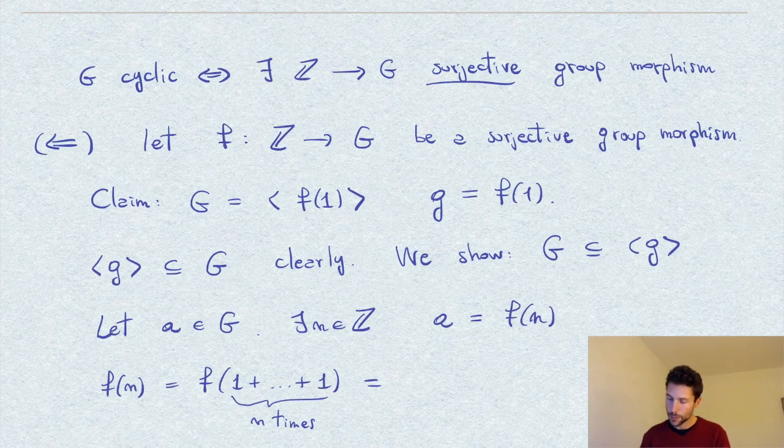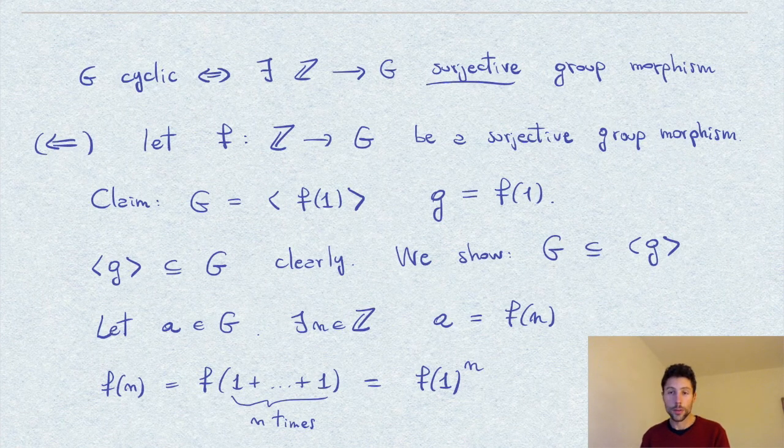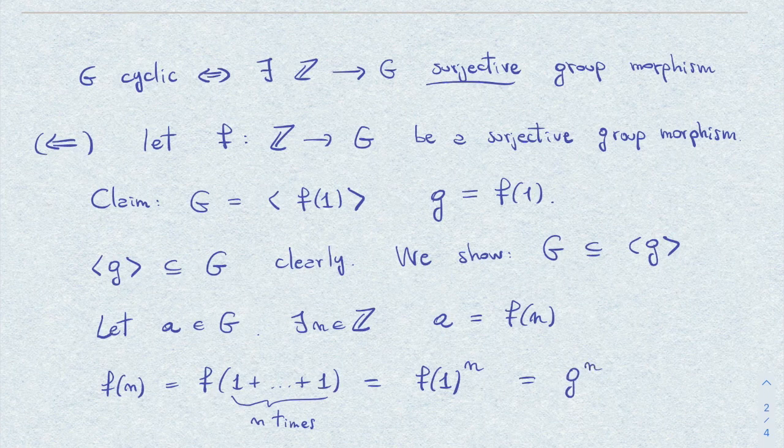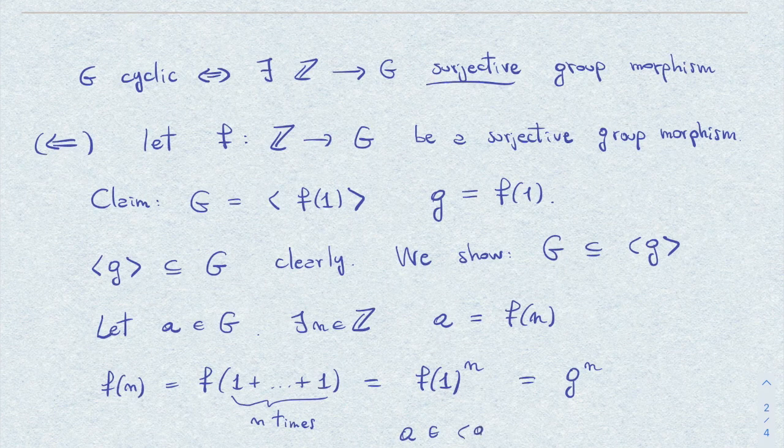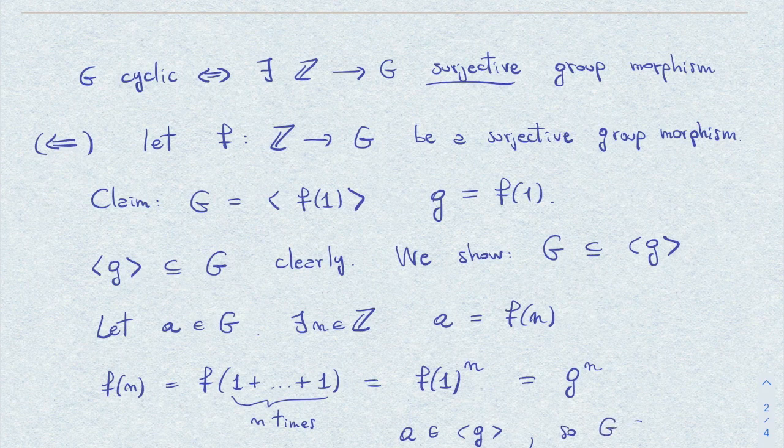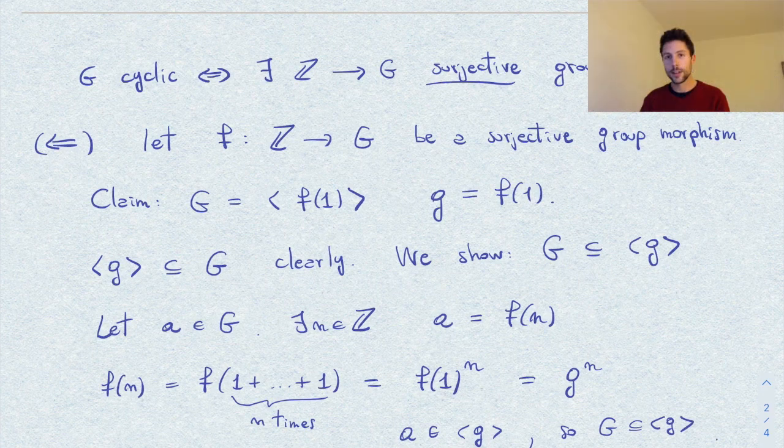On the other hand, f of n, since it's a group morphism, this is f of one plus one, a number n of times. This is also equal to f of one power n, or if you want, the product of f of one with itself n times. And this is just by how we call f of one, this is g to the n. And so this clearly proves that a is inside the group generated by g. And therefore, what we wanted to prove, namely, that the group G is contained in the group generated by the little element g. And this concludes our proof.